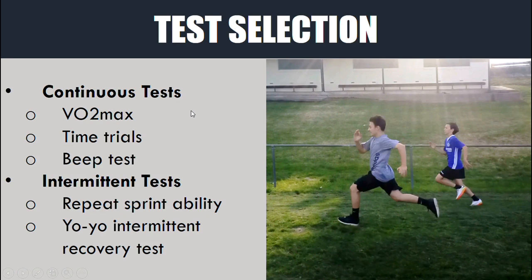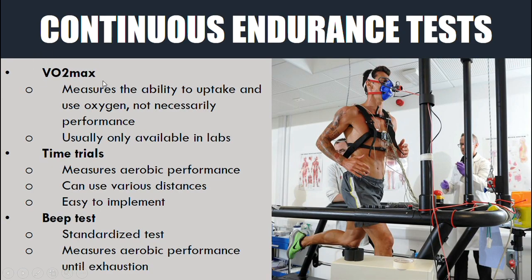When selecting tests for endurance we can have either continuous or intermittent tests. Continuous tests are something like a VO2 max, time trials, or a beep test, whereas intermittent tests are something like standardized repeat sprint ability tests or a Yo-Yo intermittent recovery test. A VO2 max test is generally only available in labs, which is a major limitation. VO2 max tests essentially measure the ability to uptake and use oxygen — the athlete is strapped up and all the inspired and expired air is measured, so how much oxygen they uptake and use is used as a measure of aerobic performance.